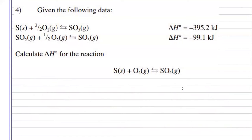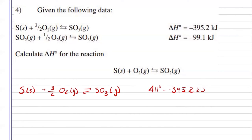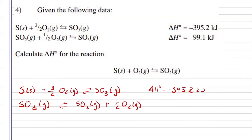For number 4, we are given the reaction steps to create sulfur dioxide. Looking at my first step, it says solid sulfur and oxygen as a reactant, so I'm just going to keep that one as is, just bringing that down. So, my enthalpy for that step would just be negative 395.2 kilojoules. For the second step, my sulfur dioxide is a reactant, so I'm going to have to flip that reaction. By doing that, I change my enthalpy from releasing 99.1 kilojoules to requiring 99.1 kilojoules for it to happen.